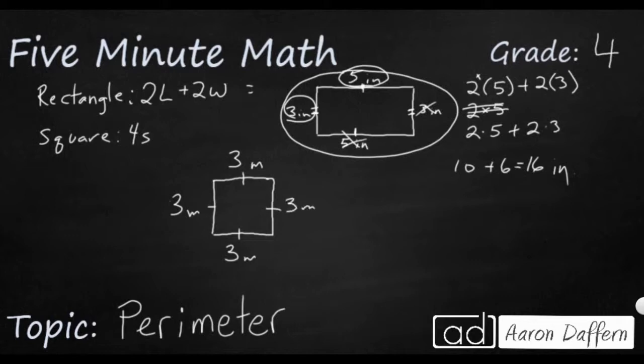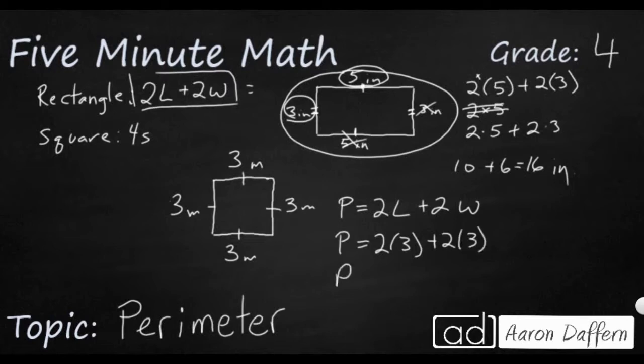Can you use the rectangle formula to find the perimeter of a square? Yes, you can, because a square is a special type of rectangle. So I'm going to say the perimeter equals 2 times the length plus 2 times the width. So that means 2 times length is 3, 2 times my width, which is also 3. So I'm really looking at 2 times 3 is 6 plus 2 times 3 is 6, which means 12 meters.